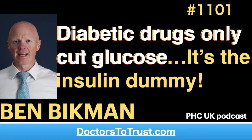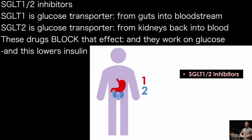SGLT1 is a glucose transporter that will move glucose from the guts into the bloodstream. SGLT2 is a transporter that will move glucose from the kidneys back into the blood. The kidneys will pull the glucose in, and then SGLT2 will put it all back into the bloodstream.